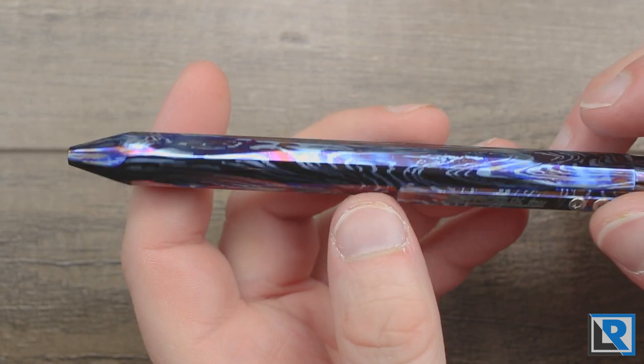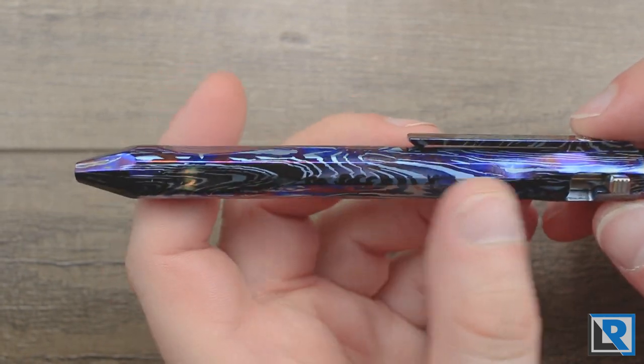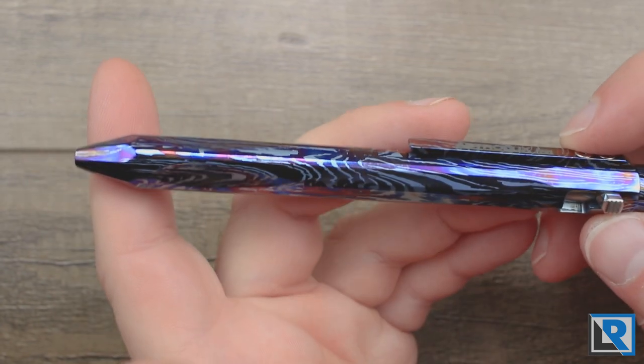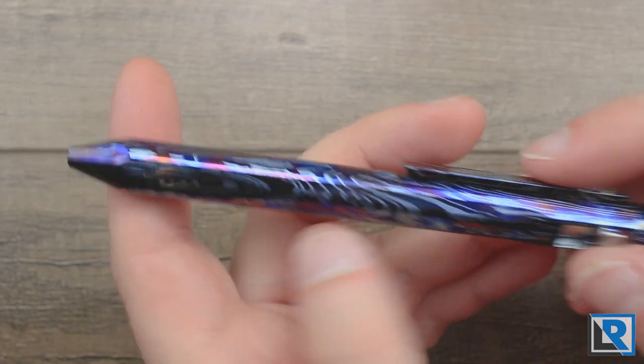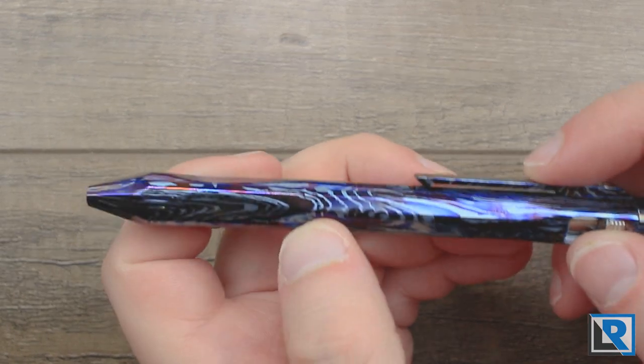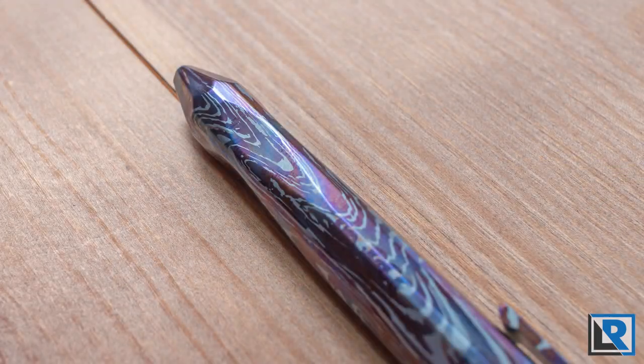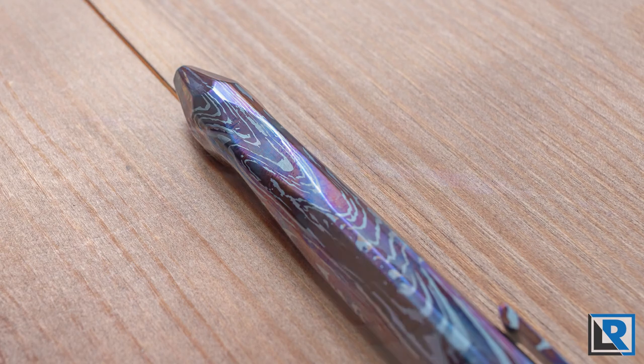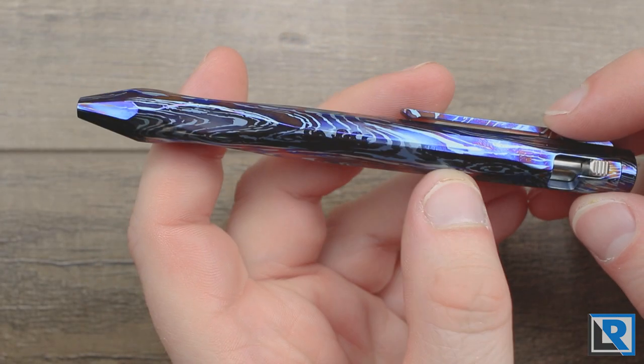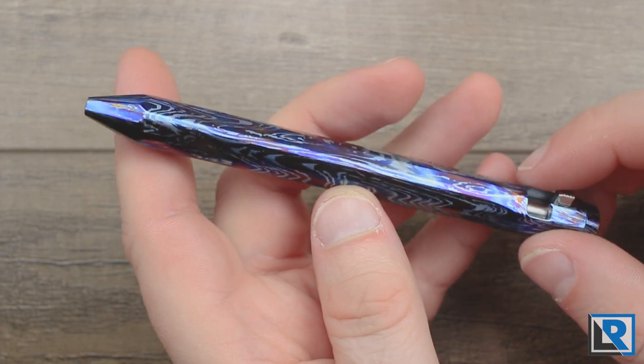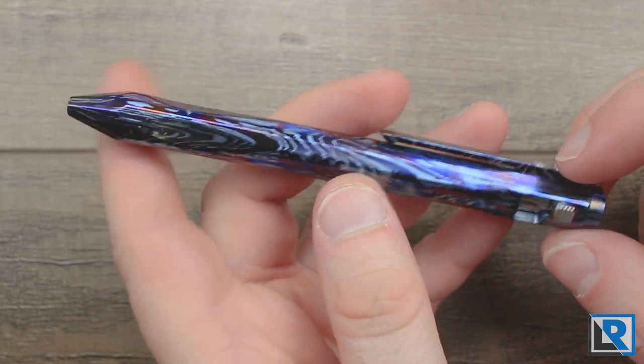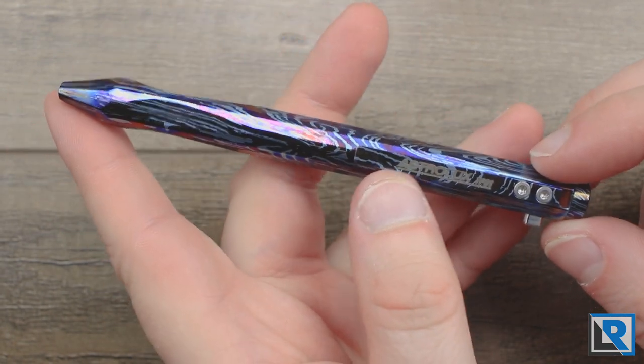It looks like damasteel or mokume that's been flame anodized, and I just love that. This is flat with no texture, but you get a lot of blues, purples, a few bronze colors in it. It's really unique and nicely done. I've carried this in my pocket and so far haven't had any problems with it scratching, so I think it's fairly durable as well.